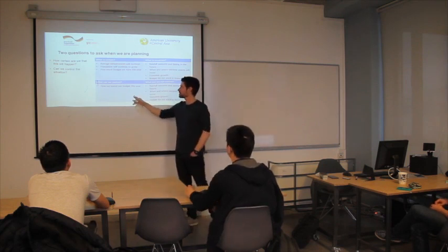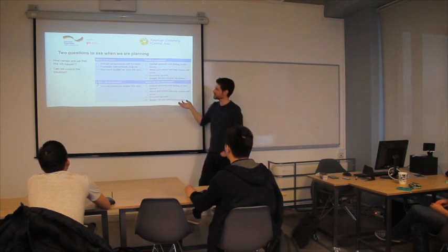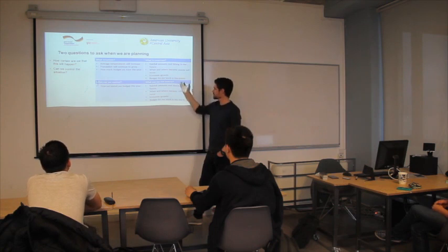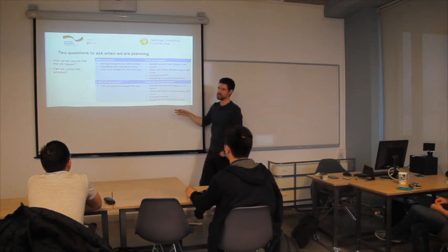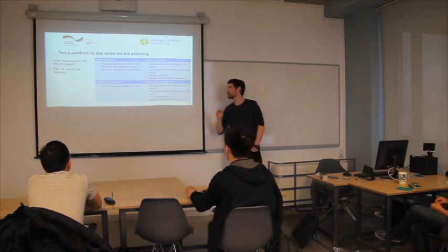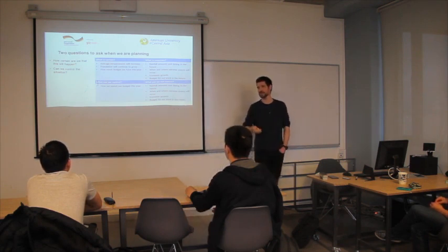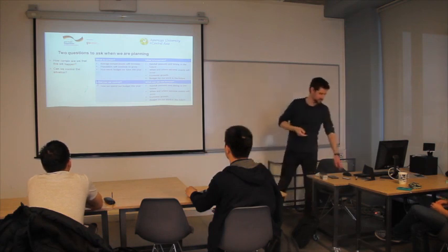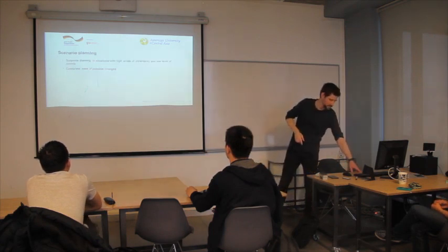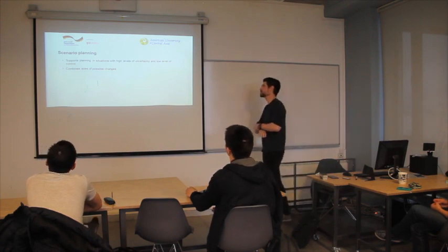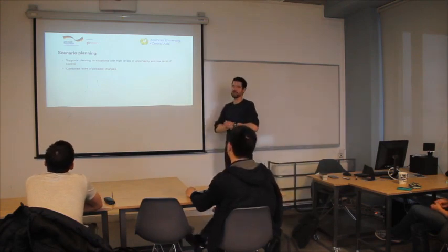And then we look at the control level, we can control more than how much budget we can spend, but again, basically, this coincides, rainfall amounts and timing, where and where extreme events, and so on. So, we have a high level of uncertainty and actually a low level of control. And then we use something which is called scenario planning.